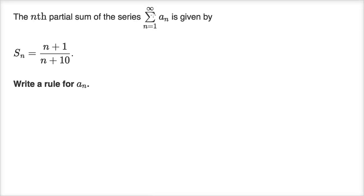The nth partial sum of the series, going from one to infinity, summing it up of a_n, is given by a formula. They tell us the formula for the sum of the first n terms and say write a rule for what the actual nth term is going to be.